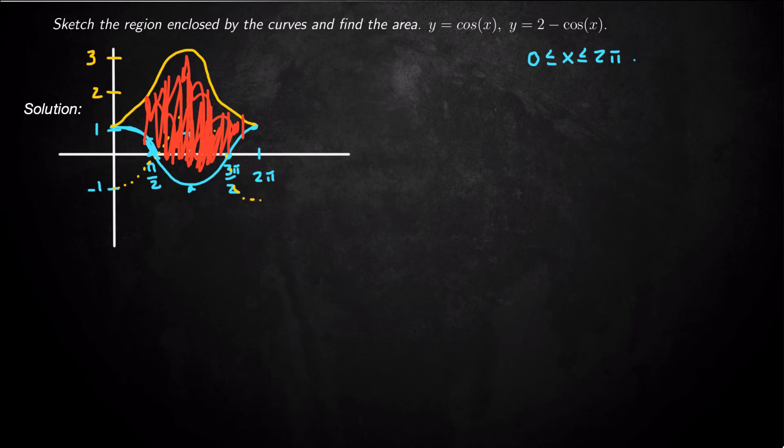So the area enclosed is the upper function integral from 0 to 2 pi of the upper function. In this case, the upper function is 2 minus cosine x minus the lower function, which is just cosine x dx. You always do the upper function minus the lower function.